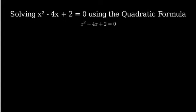We're solving x squared minus 4x plus 2 equals 0 using the quadratic formula. We'll go through this step by step.